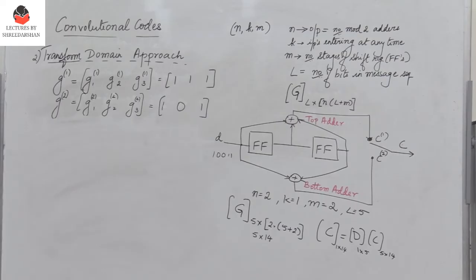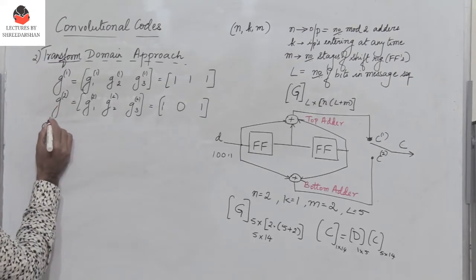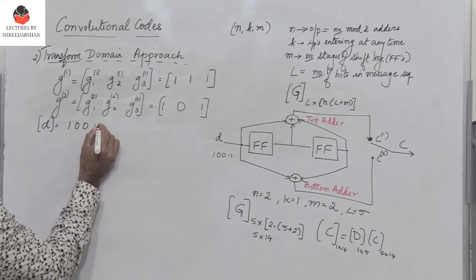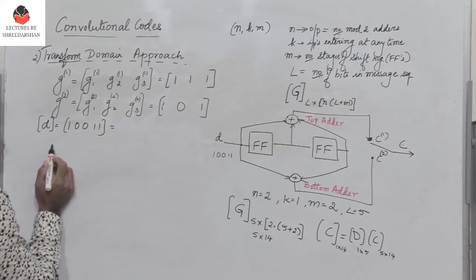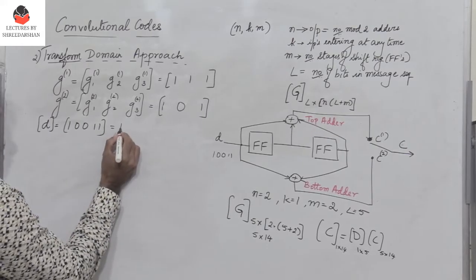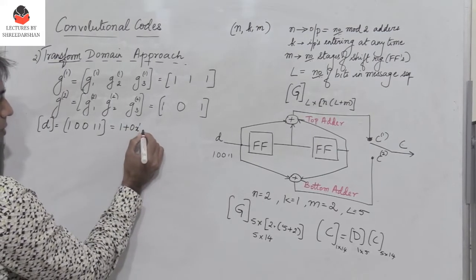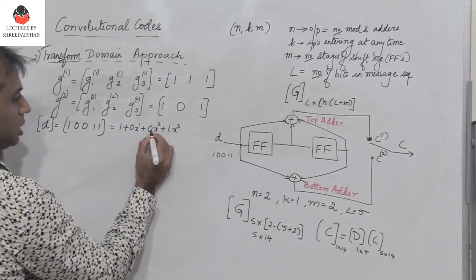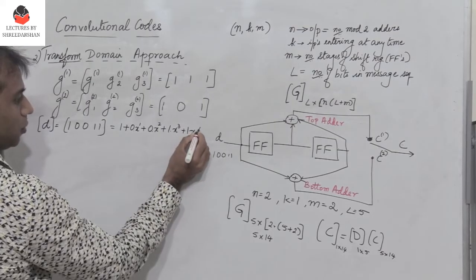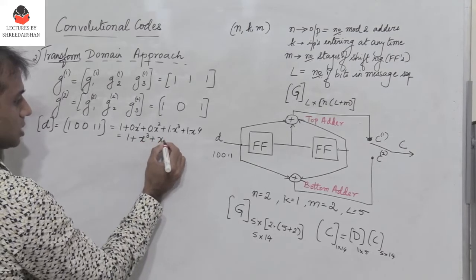In the transform domain approach I have to get the message polynomial. So D is nothing but 10011. The message polynomial is the coefficient of x⁰ which is 1·x⁰ plus 0·x¹ plus 0·x² plus 1·x³ plus 1·x⁴. So the message polynomial D(x) = 1 + x³ + x⁴.